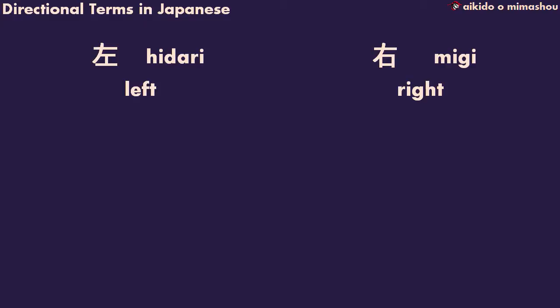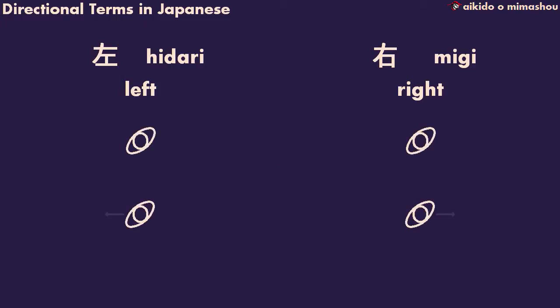Hi-dari, hi-da-ri, and migi, mi-gi. These words are exact replacements, so can be used whenever you want to indicate which side you're talking about. If we imagine two people facing each other during a technique, you can easily recognise left or right movement.